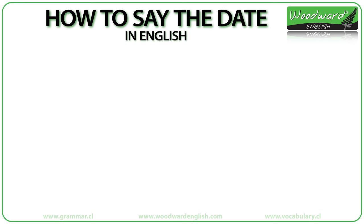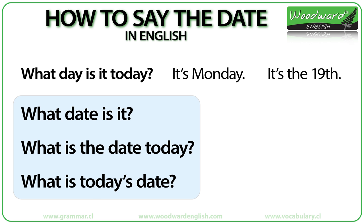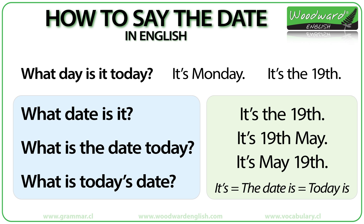How can we ask for the date? You could ask, what day is it today? Though here people will probably respond with the day of the week — it's Monday — or the number, it's the 19th. The main ways of asking the date are: what date is it? Or what is the date today? Or what is today's date? People may give you the number — it's the 19th — or the day and the month: it's the 19th of May, or May 19th.